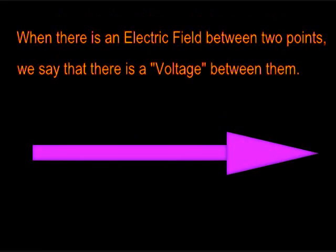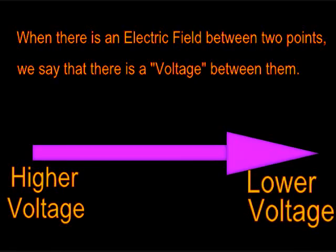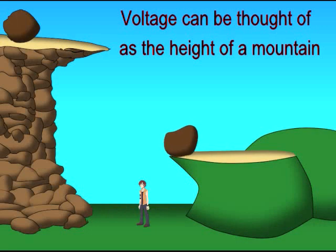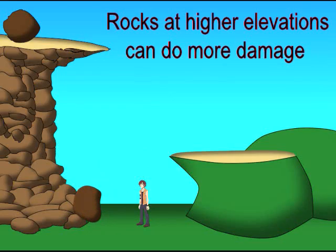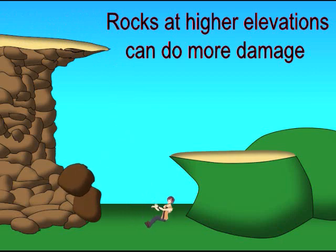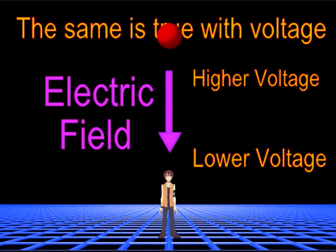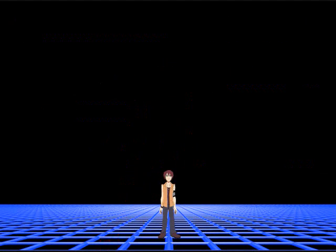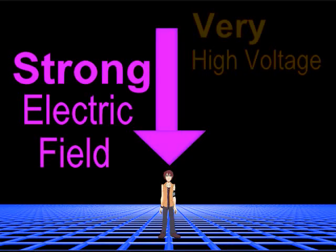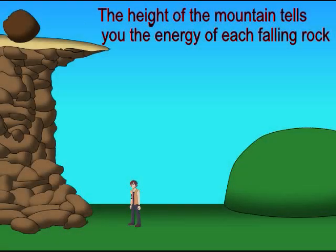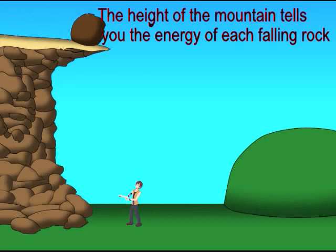When there is an electric field between two points, we say that there is a voltage between them. Voltage can be thought of as the height of a mountain — rocks at higher elevations can do more damage. The same is true with voltage. The height of the mountain tells you the energy of each falling rock.